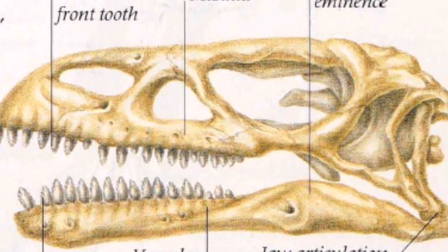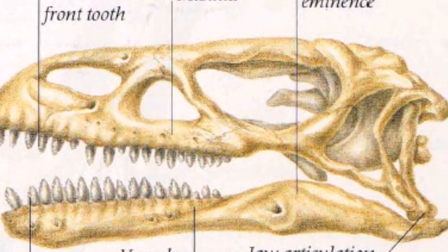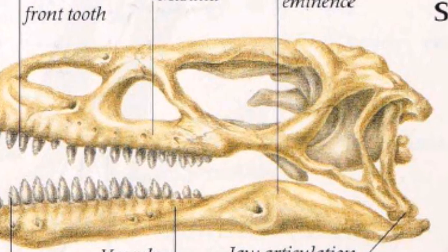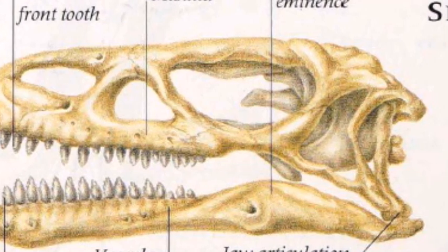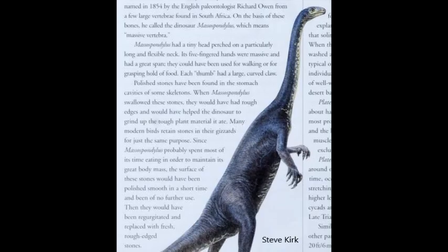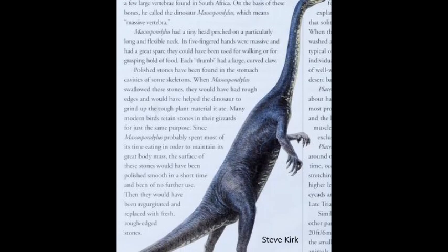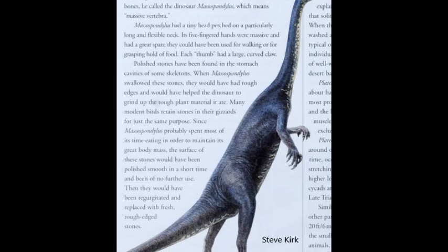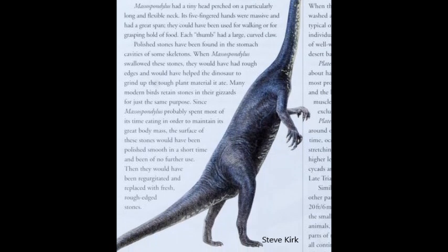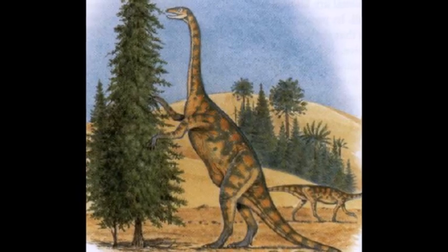Massospondylus had varied teeth and an unusual projecting upper jaw. This has led to suggestions that its lower jaw ended in a beak, although other features of its jaw make this unlikely. Massospondylus also had a long and flexible neck, allowing it to graze on tree branches, unlike other contemporary reptilian plant eaters.